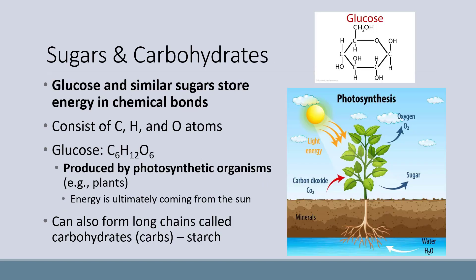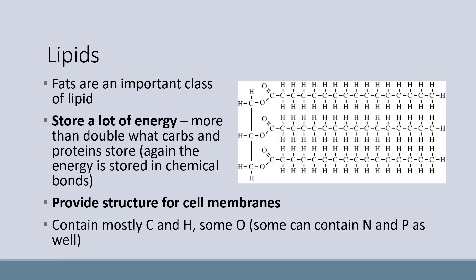Now let's talk about sugars and carbohydrates, which are one of the four main classes of compounds that make up living organisms. Glucose and similar sugars store energy in chemical bonds. They consist of carbon, hydrogen, and oxygen atoms. Glucose has the chemical formula C6H12O6. It is produced by photosynthetic organisms like plants. The energy that the plant stores as chemical bonds is ultimately coming from the sun. Sugars can also form long chains called carbohydrates.